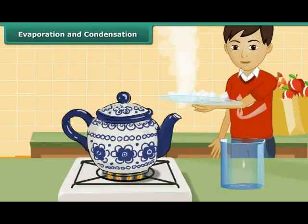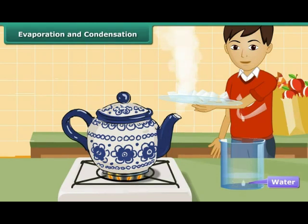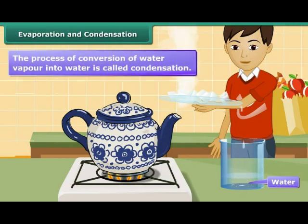In order to obtain the water while heating the salt water, hold a plate containing ice just above the spout of the kettle. When the steam escaping through the spout comes in contact with the plate containing ice, it condenses and forms water. This process gives us back the water. This process of conversion of water vapor into water is called condensation.